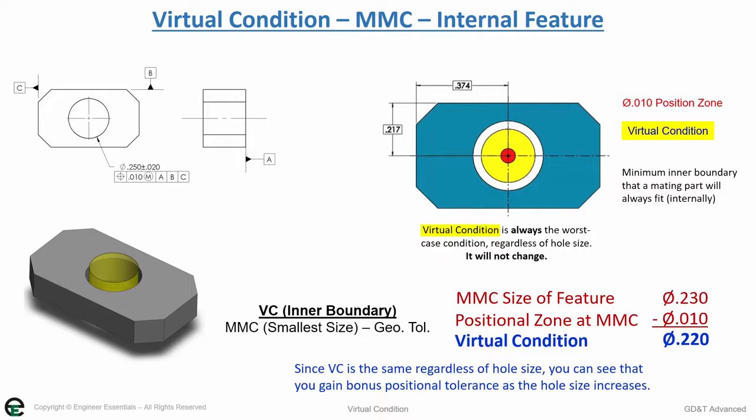Since VC is the same, regardless of hole size, you can see that you gain bonus positional tolerance as the hole size increases.